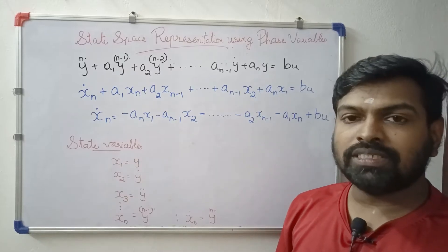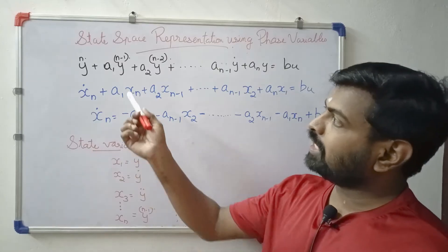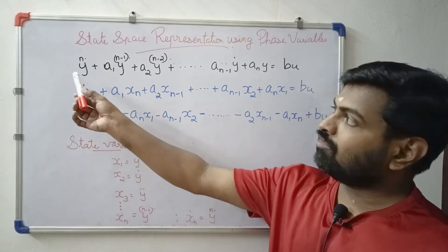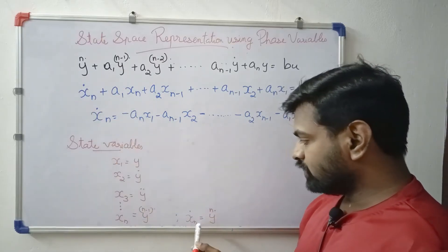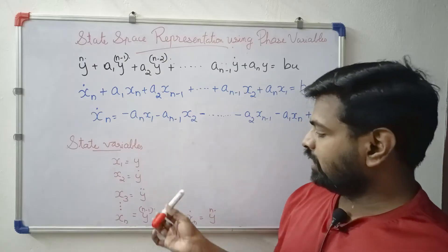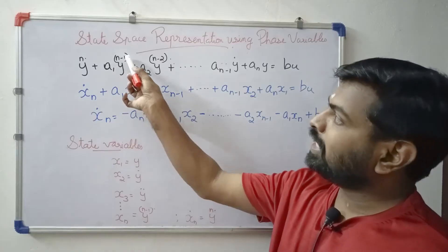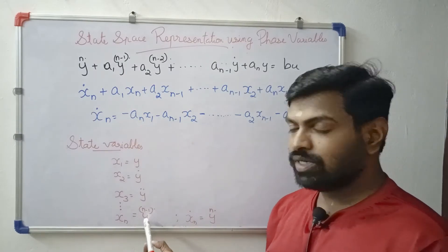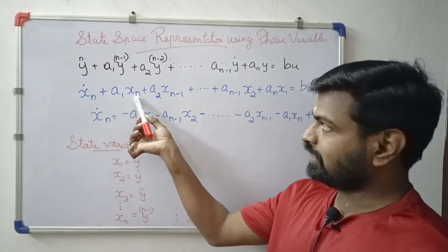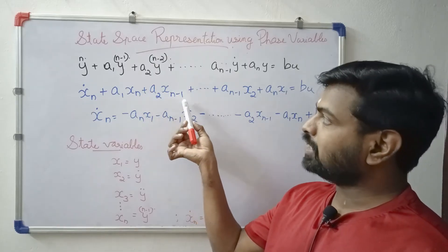Now we derive the state variable equations. We substitute yn-dot. Substituting a1 into yn-1, we get yn-1-dot equals xn. Then a1*xn, and a2*yn-2-dot is a2*xn-1.